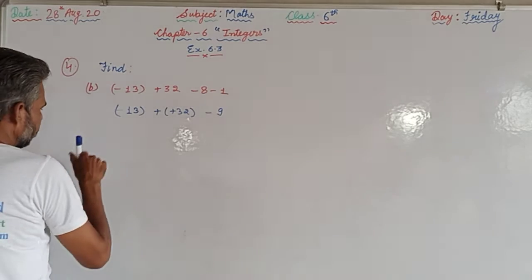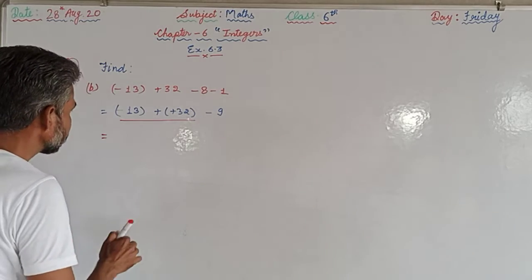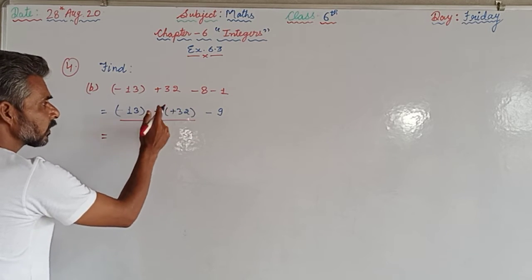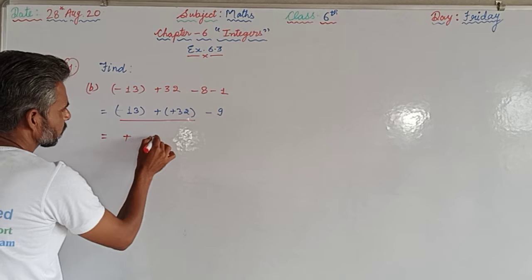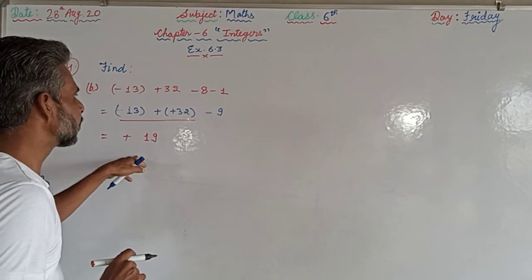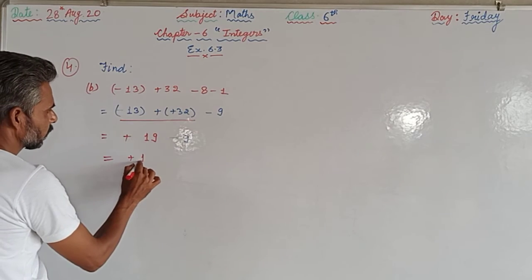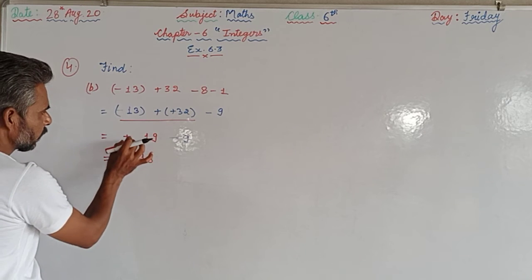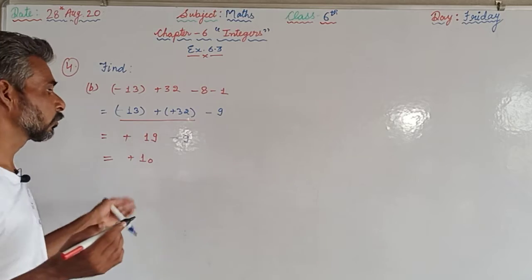We solve the first pair with different signs: 32 is larger in magnitude, so the sign of 32 — which is plus — will be in the answer. 32 minus 13: 2 minus 3 gives 9 in units, and 3 minus 1 gives 1 in tens, so plus 19. Now plus 19 and minus 9 have different signs; the larger is 19 with a plus sign, so 19 minus 9 equals plus 10.